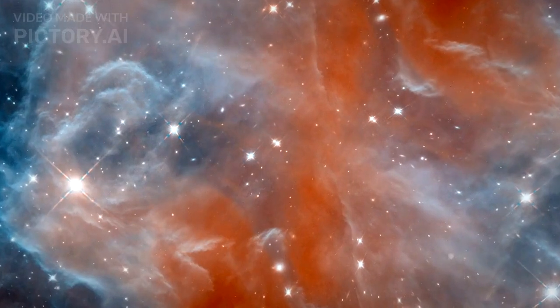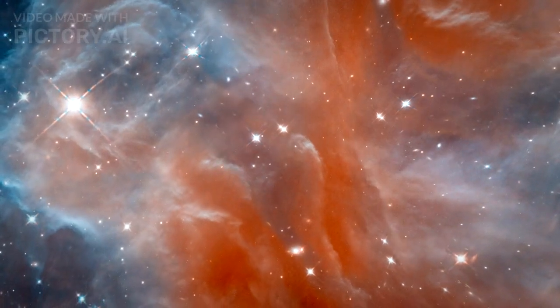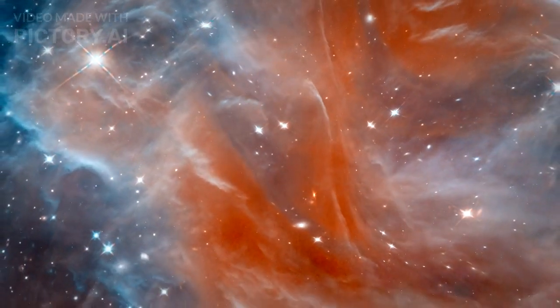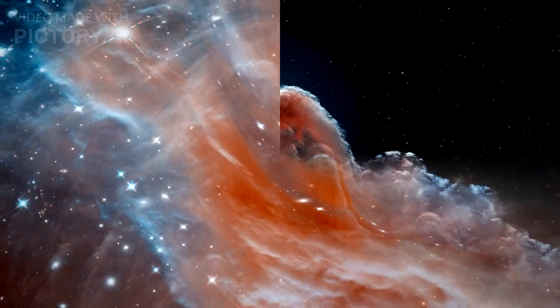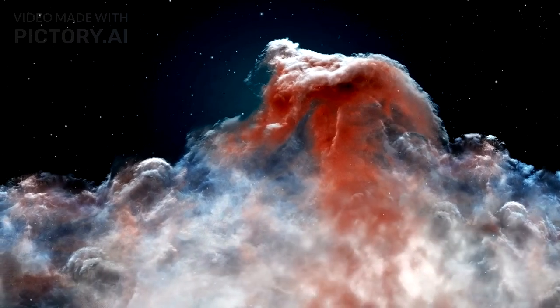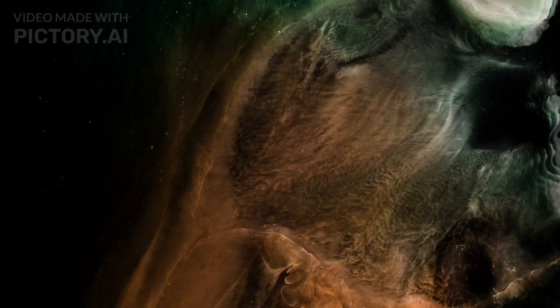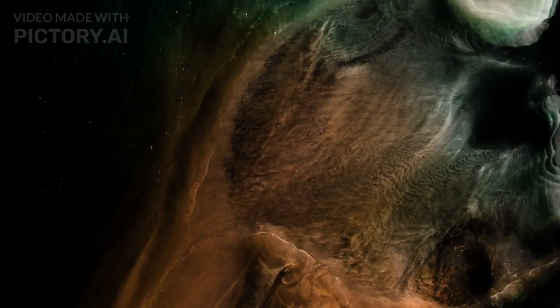The James Webb Space Telescope has also provided detailed views of the Horsehead Nebula, a structure 1,300 light-years away. This iconic nebula, illuminated by nearby stars, has been observed in unprecedented detail, revealing how dust particles are shaped by ultraviolet light, creating intricate patterns.